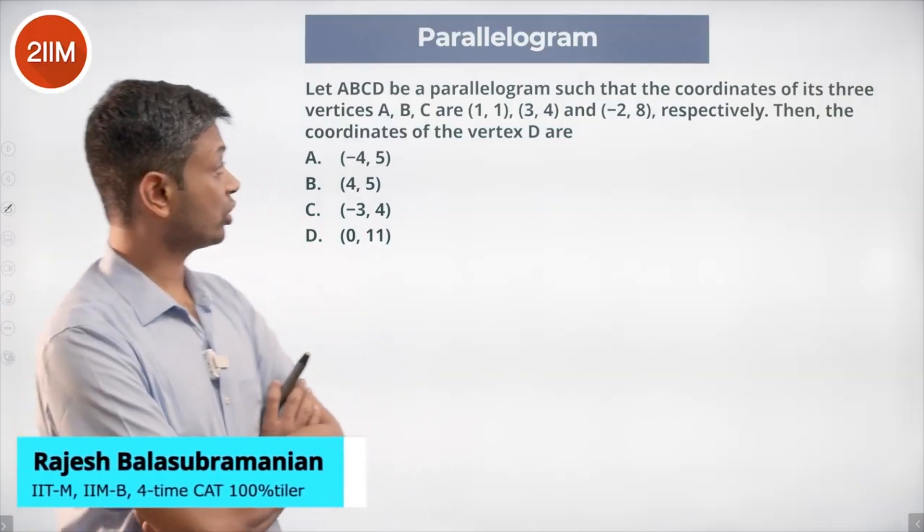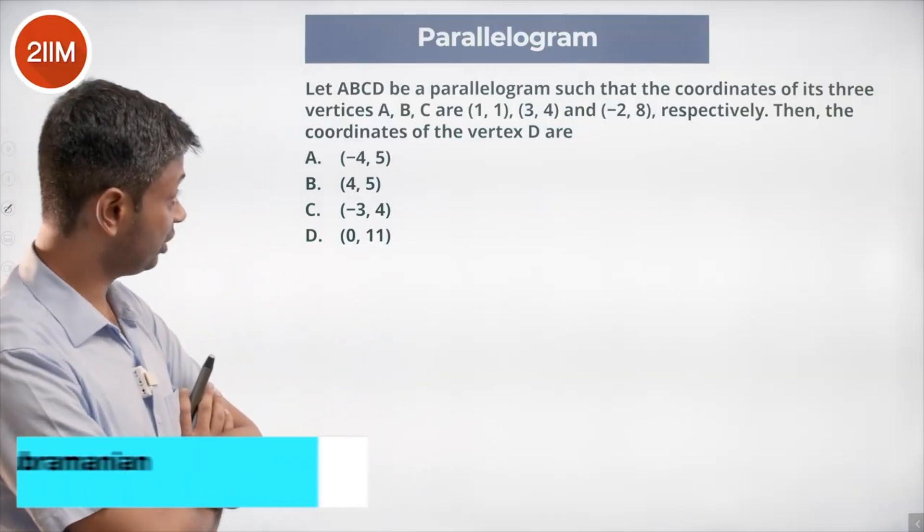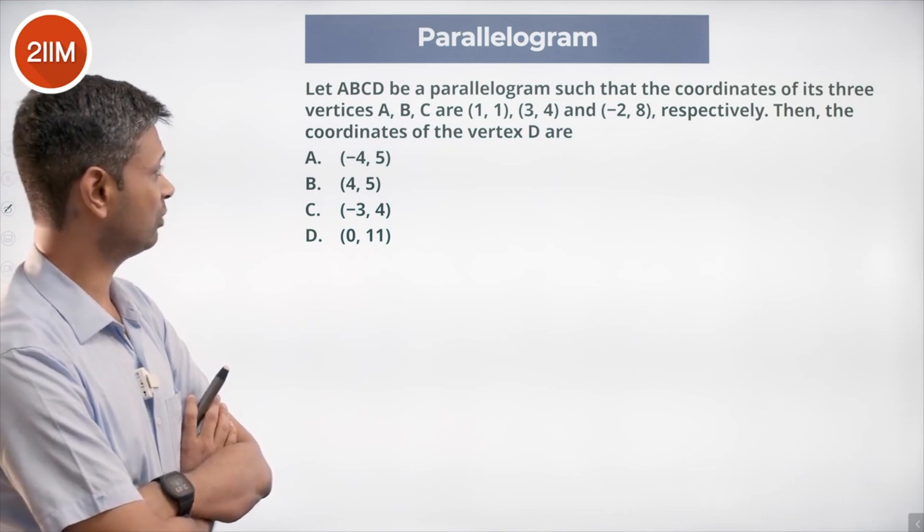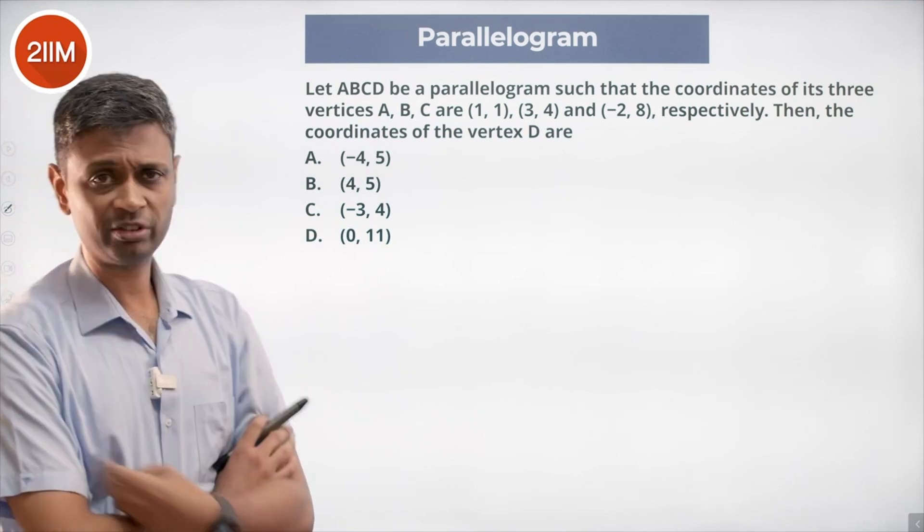Let ABCD be a parallelogram such that the coordinates of three vertices A, B, C are (1,1), (3,4), and (-2,8) respectively. Then the coordinates of the vertex D are...